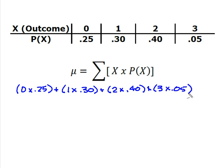So I'm going to multiply all of those together and it's going to give me 0 plus 0.30 plus 0.80 plus 0.15. And so when I add all of those up what I know is the average long run theoretical average expectation or expected value will be 1.25 bones.